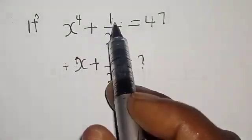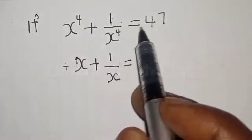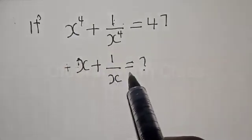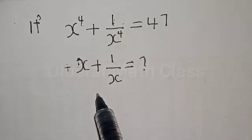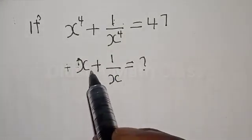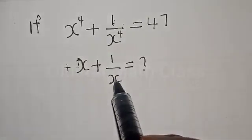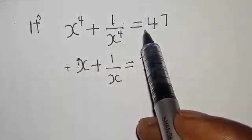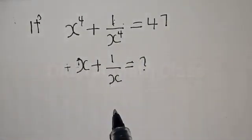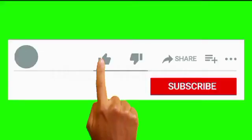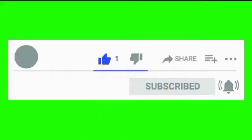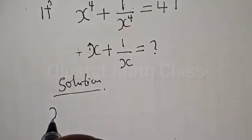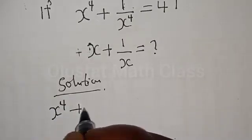If s raised to power 4 plus 1 over s raised to power 4 is equal to 47, what is the value of s plus 1 over s? Hi everyone, welcome to my class. In this class we want to look at how we can quickly find the value of s plus 1 over s from this given equation. Please don't forget to like, share, comment and subscribe.